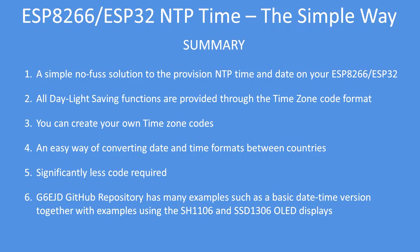In summary, it's a simple, no-fuss solution to provisioning NTP time on your ESP device. All daylight saving functions are handled through the timezone code, and you can create your own codes. It's an easy way to convert date and time formats between countries, and requires significantly less code than the complex routines I've seen. I've put quite a lot of examples in my GitHub repository — callsign G6EJD — and I hope you find them useful. Thank you.